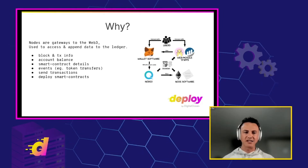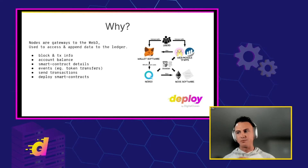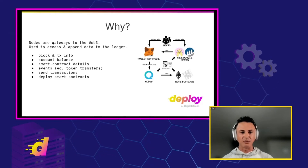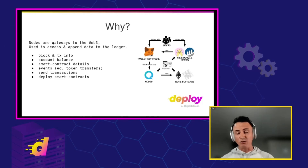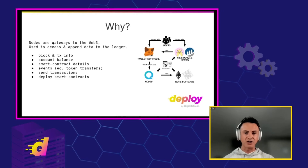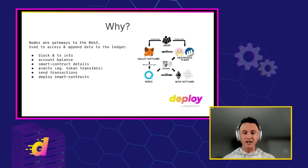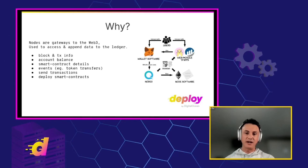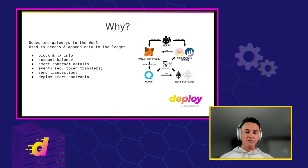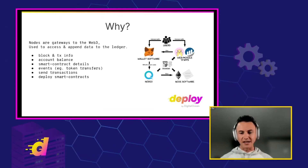You might also be thinking, why do we need access to nodes? Nodes are basically gateways to Web3. They're used to access and append data to the ledger. You would need to speak to a node if you want to know the block number, transaction info, or account balance — who owns what. The newer blockchains have things called smart contracts, which are essentially little programs uploaded into the blockchain network, and they're executed exactly as written — no ifs, ands, or buts. You would also need to communicate with a node to deploy smart contracts and to send transactions.